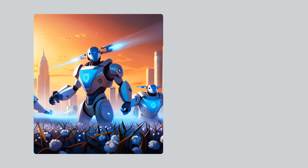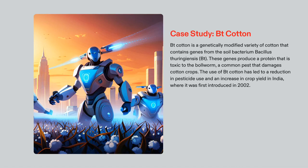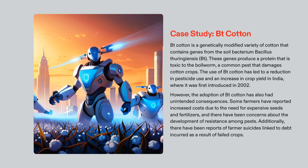Genetic engineering has revolutionized agricultural practices, particularly with the development of Bt cotton. This genetically modified variety of cotton contains genes from the soil bacterium Bacillus thuringiensis, producing a protein that is toxic to the bollworm, a common pest. This allows farmers to reduce their usage of harmful pesticides, thus increasing crop yields. Since its introduction in India in 2002, Bt cotton has had a profound impact on the country's agricultural industry, providing economic benefits but also having some unintended consequences, including higher costs of seed and fertilizers, and the potential for the development of pest resistance. Cases of farmer suicide have been linked to increased costs and lack of access to traditional agricultural knowledge. These cases illustrate the importance of taking into account potential implications of genetic engineering, and ethical principles must be applied to ensure its safe and responsible implementation.